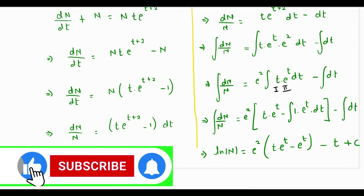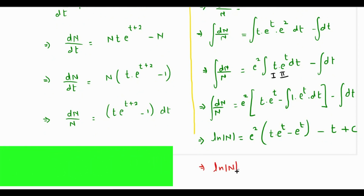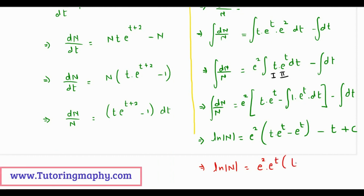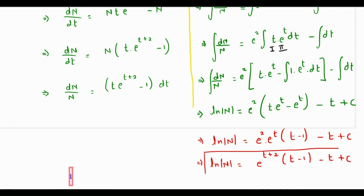Rewriting the result, the natural log of n equals e squared times e raised to t, with e raised to t factored out leaving t minus 1, minus t plus C. Clubbing the two exponents together just as they were initially, this becomes e raised to t plus 2 times the quantity t minus 1, minus t plus C, which is the final answer.